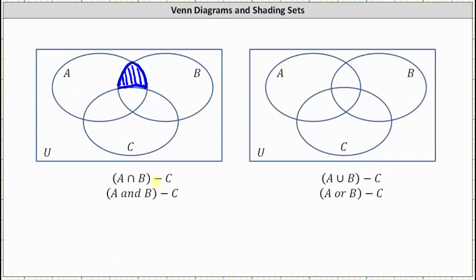For the last example the only difference is we have union rather than intersection. Here we have A union B minus C, which is the set of elements that are in A or B but not in C. So let's first shade A union B — this set here — but then for A union B minus C, we want the elements in this union that are not in C. Therefore the final set is this region here, where we cut the piece of the union that overlaps with C.